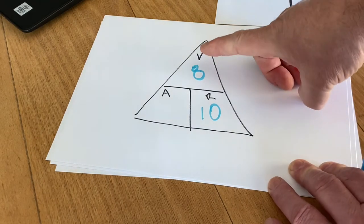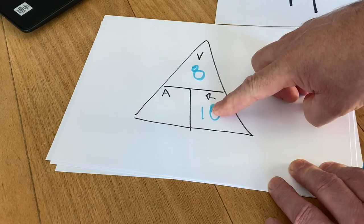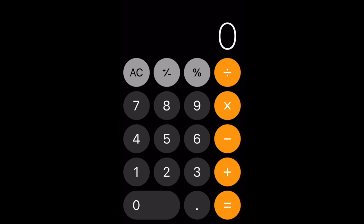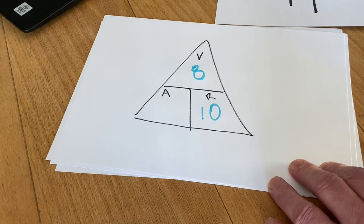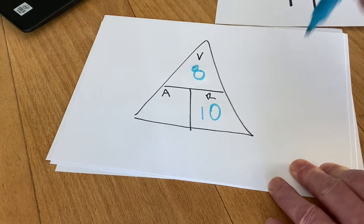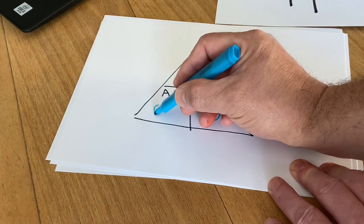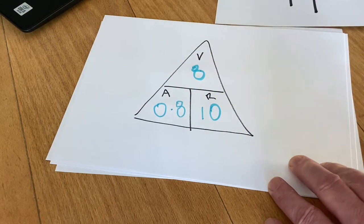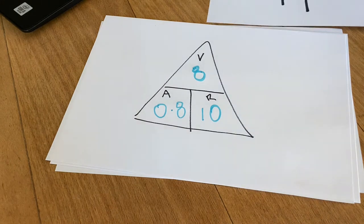So now we've got to do a calculation. 8 divided by 10. So I'll show you that on my calculator. So punching 8 divided by 10 equals 0.8. So we can write 0.8 in this box on the triangle now. So we now know there's 0.8 amps flowing through the complete circuit.